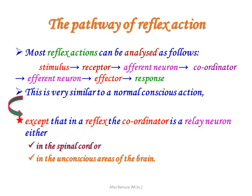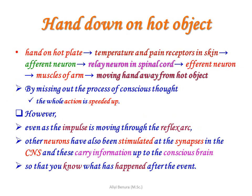The key difference is that in a reflex, the coordinator is a relay neuron either in the spinal cord or in an unconscious area of the brain. For example, placing a hand on a hot object: temperature and pain receptors in the skin send information via afferent neurons to relay neurons in the spinal cord, and efferent neurons then instruct the arm muscles to respond by moving the hand away from the hot object.